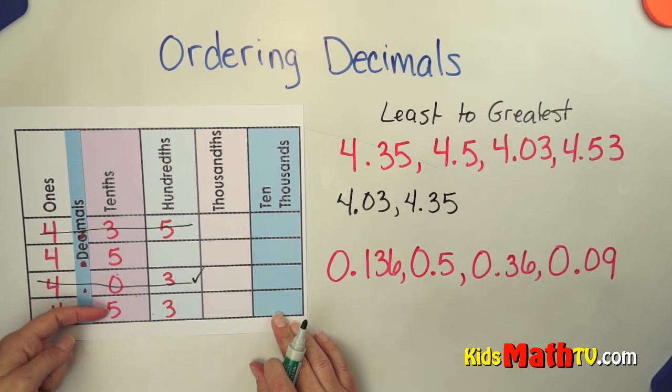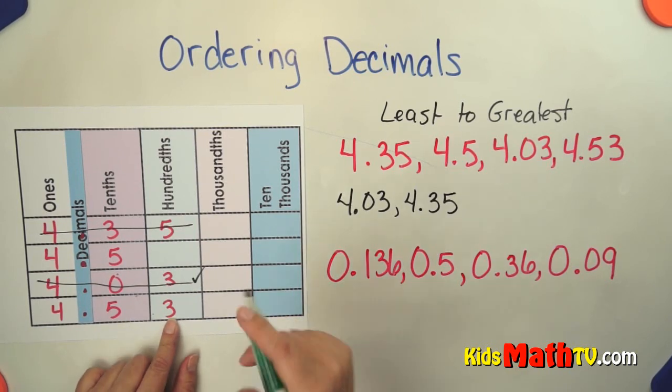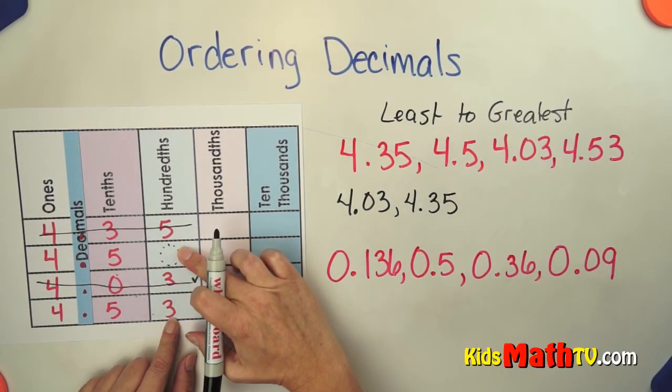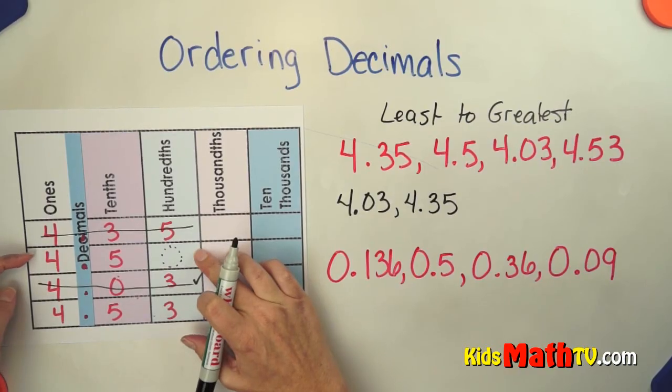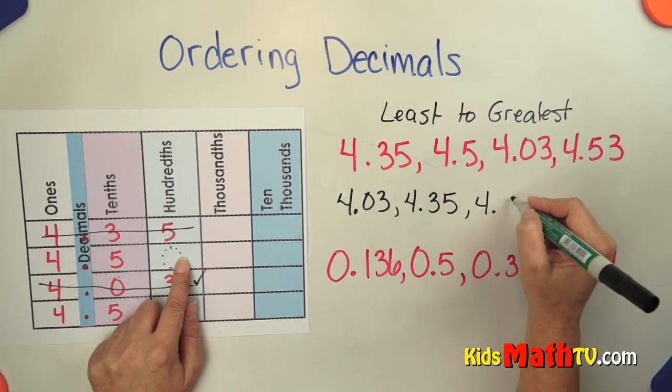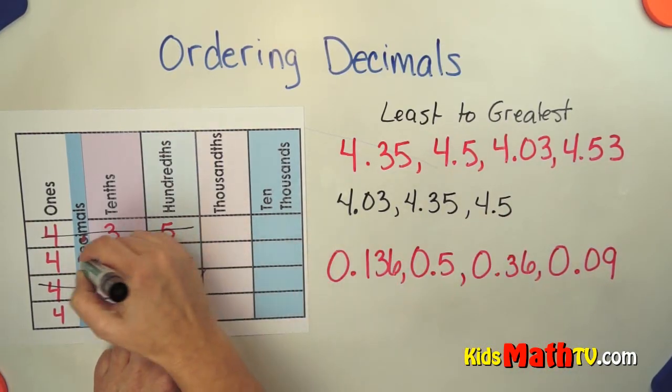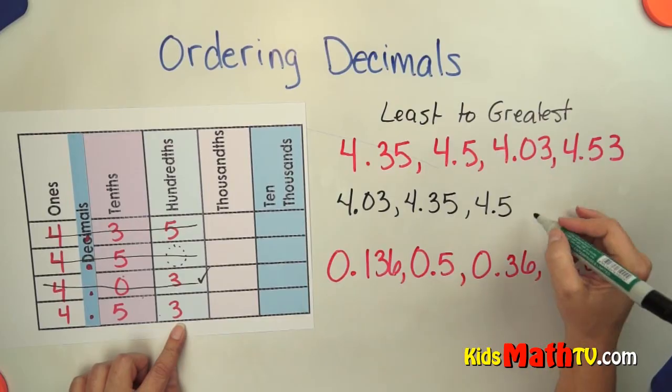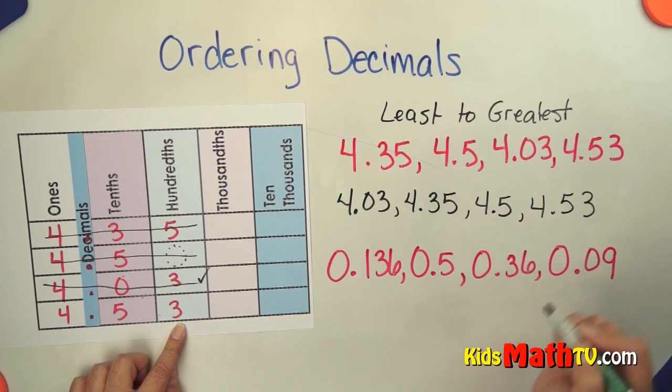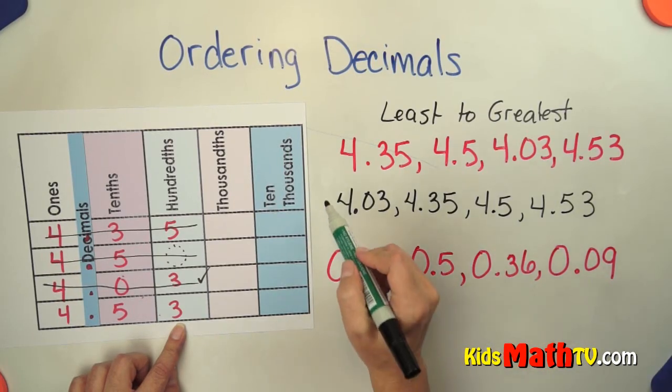Now we look for our next largest tenths, but they're both fives. So we have to now go to the hundredths place. In the hundredths place, I see a 3 and nothing. Well, in math, we represent nothing as zero. So this is zero hundredths and three hundredths. Zero hundredths is less than three hundredths. So this number, 4 and 5 tenths, is the next largest number, leaving our largest number as 4 and 53 hundredths.